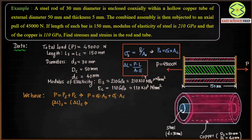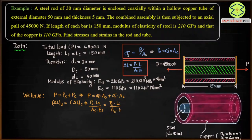Writing out the deformation equality: delta L in steel equals load in steel times length of steel divided by area of steel times Young's modulus of steel, and this equals load in copper times length of copper divided by area of copper times Young's modulus of copper. For a composite assembly, these two results — total load equals sum of individual loads, and equal deformation — are used to solve the problem.